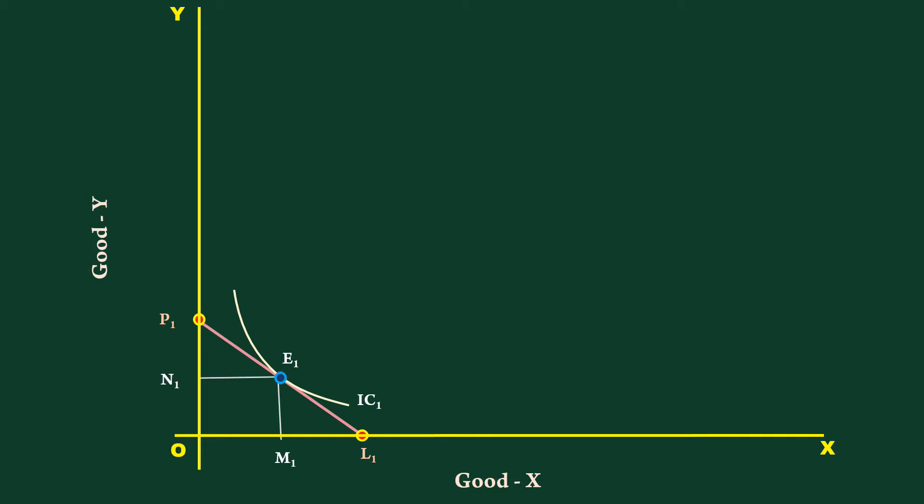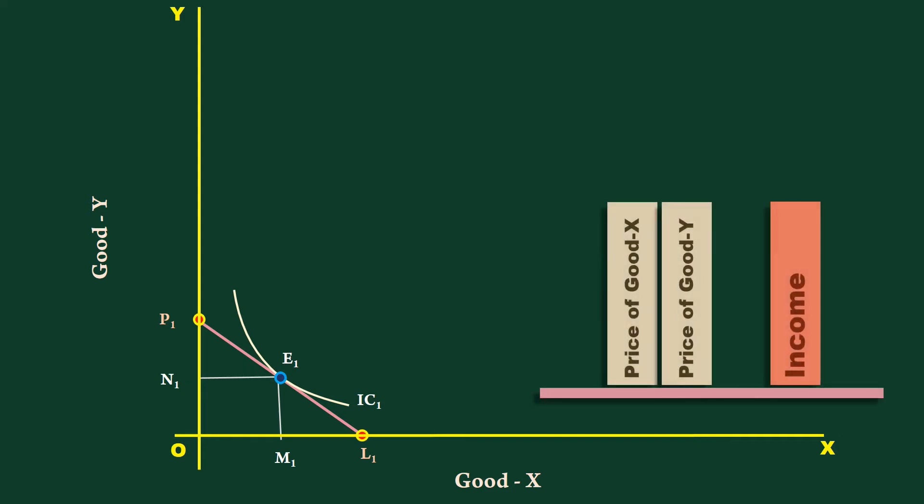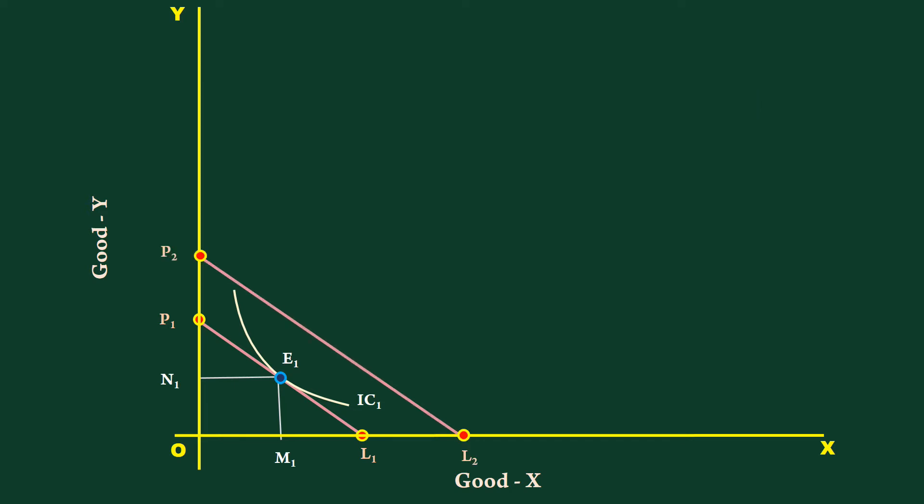As we are going to examine the effect of change in income on the quantity consumed of the two goods, we assume the prices of the two goods do not change. Income alone is going to increase. With an increase in income of the consumer, the price line P1L1 shifts to right. The new price line is P2L2.